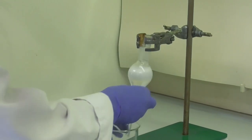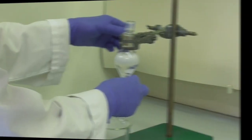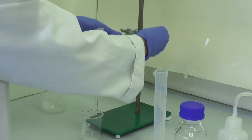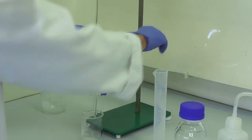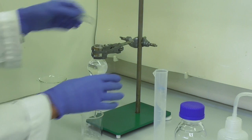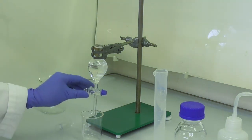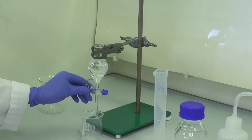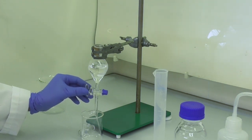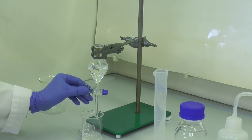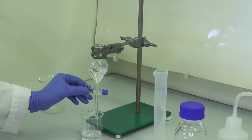At the end of the shaking, we clamp the funnel, take off the stopper and drain the bottom layer, which is the aqueous layer. We drain the liquid until the interface between top and bottom layer is just above the tap or inside the tap.